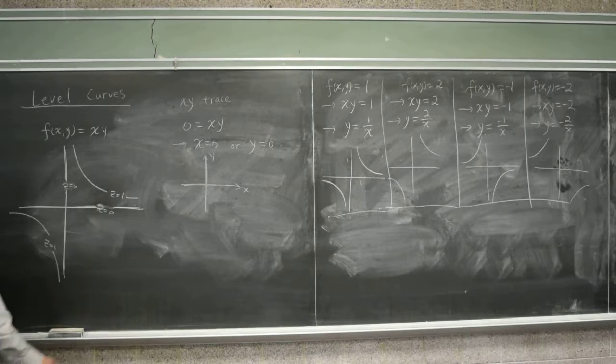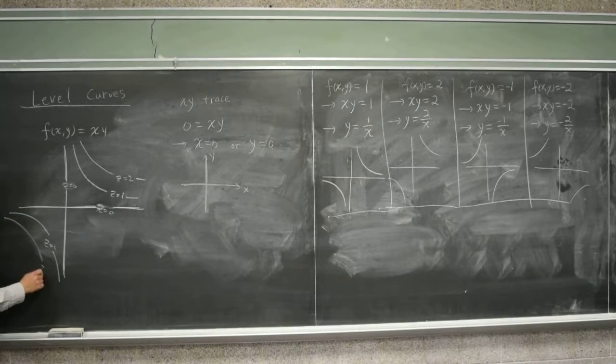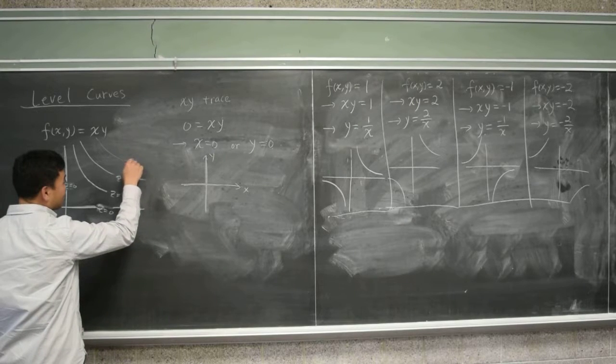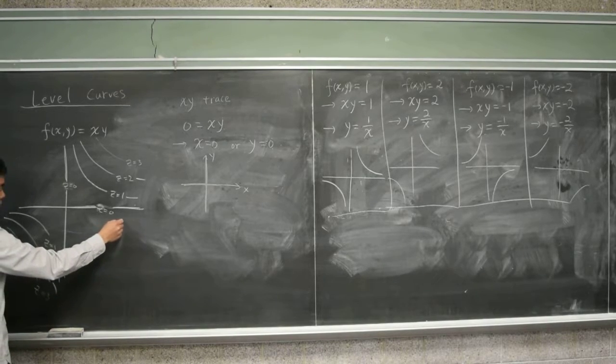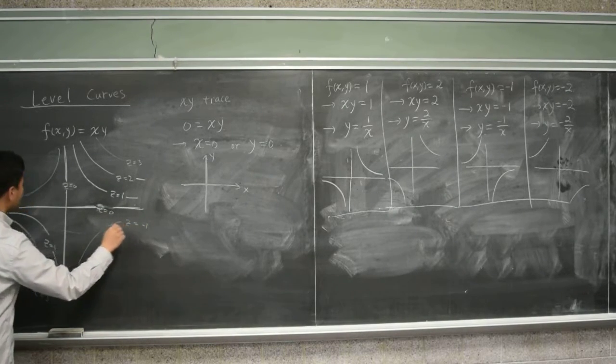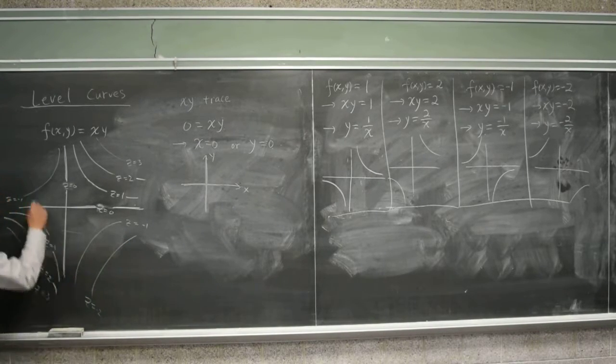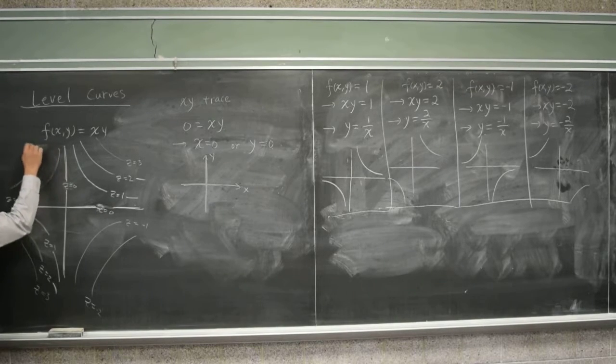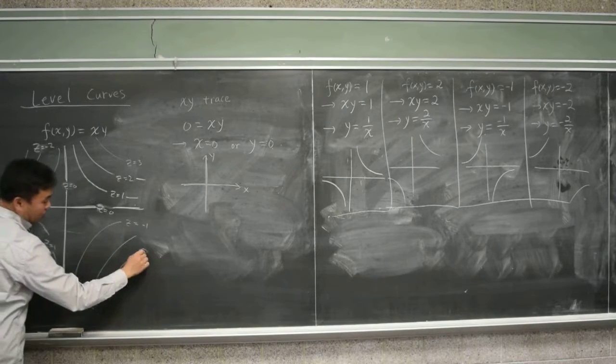When z is two, you get this graph. And you can kind of predict what's going to happen. You can think about the next one, which is z equal to three. And on the left side, it's going to give you this for z equal to negative one. And this for z equal to negative two. And furthermore, for z equal to negative three.